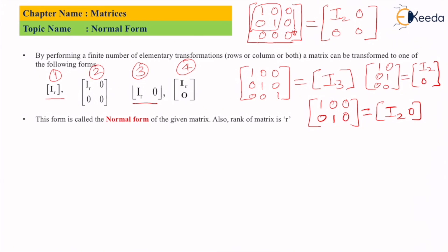These are the four forms, all called normal form or canonical form. Now to obtain these forms, whatever matrix is given in the question, we try to bring one on the diagonal at positions a_11, a_22, and a_33.